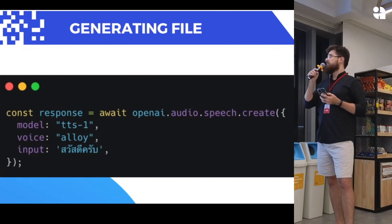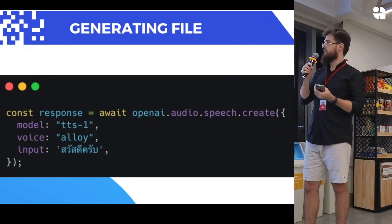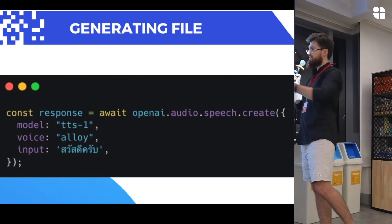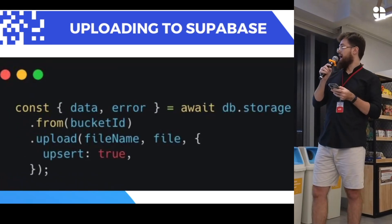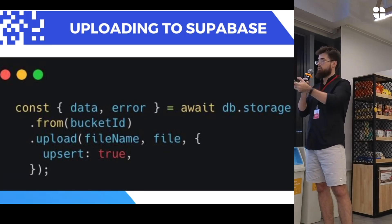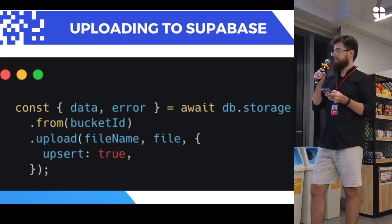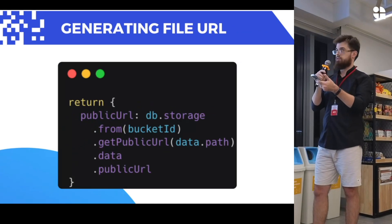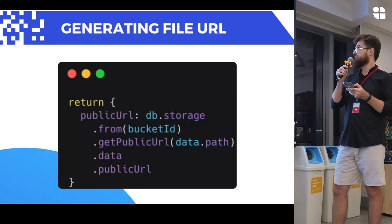I also use Supabase to store files. For example, if I decide to study Thai — which is actually how I study Thai — I can create a voice recording using OpenAI and store it in Supabase. I just use storage, specify the bucket ID (which is like a folder for files), then specify a file name and the actual file, and that's enough. You then get a URL which you can attach to the card — in my case, the card was 'Sawasdee Krap,' so I can attach the voice and store it in Supabase.